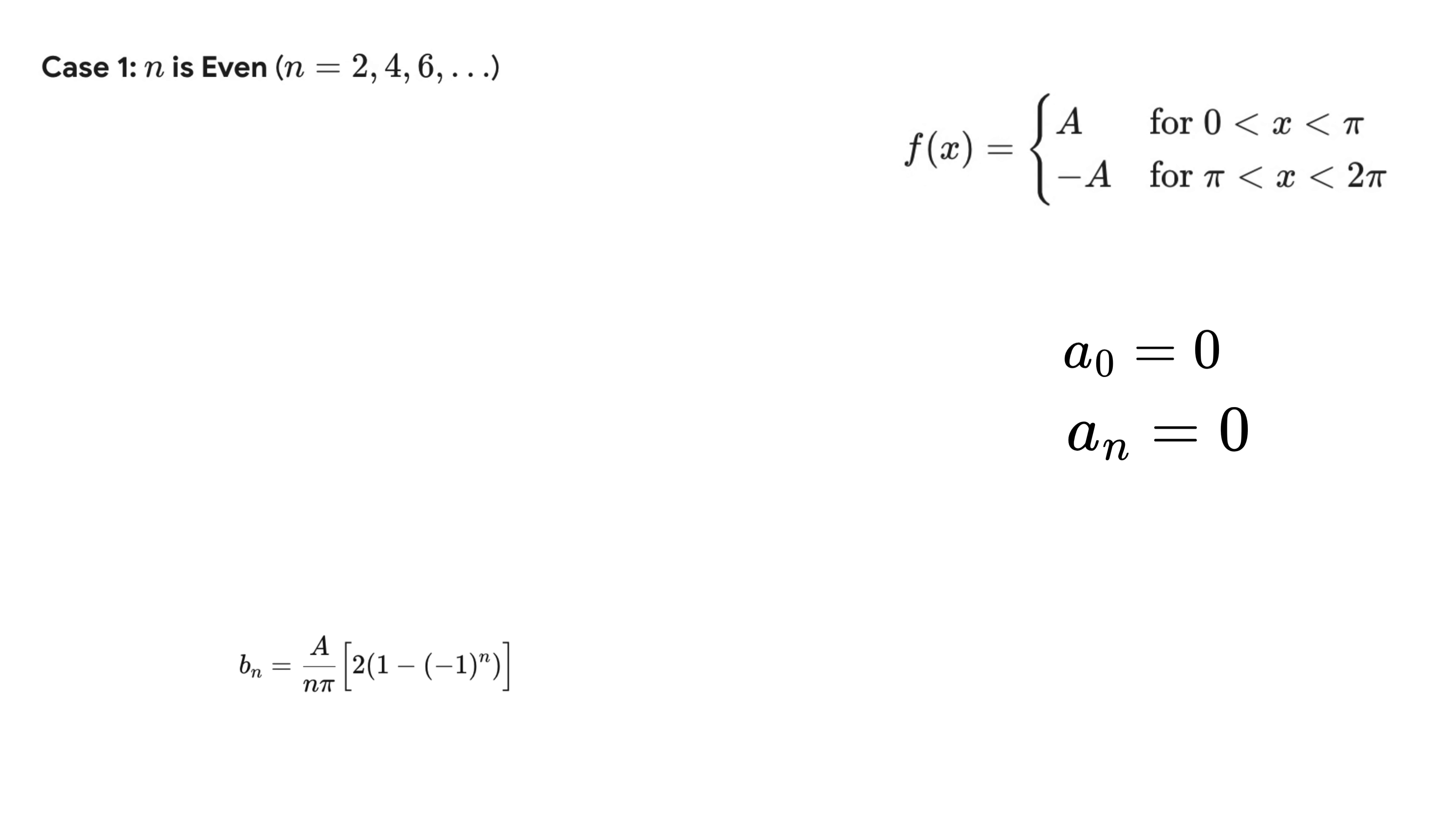When n is even, that means n equals 2, 4, 6, and so on, the term minus 1 to the n becomes 1 itself, and thus bₙ becomes 0. When n is odd, that means n equals 1, 3, 5, and so on, the term minus 1 to the n becomes minus 1, and thus this term becomes 2. So bₙ becomes 4A divided by nπ. This shows that only the odd harmonics are present in the Fourier series of the square wave, and the even harmonics vanish completely.